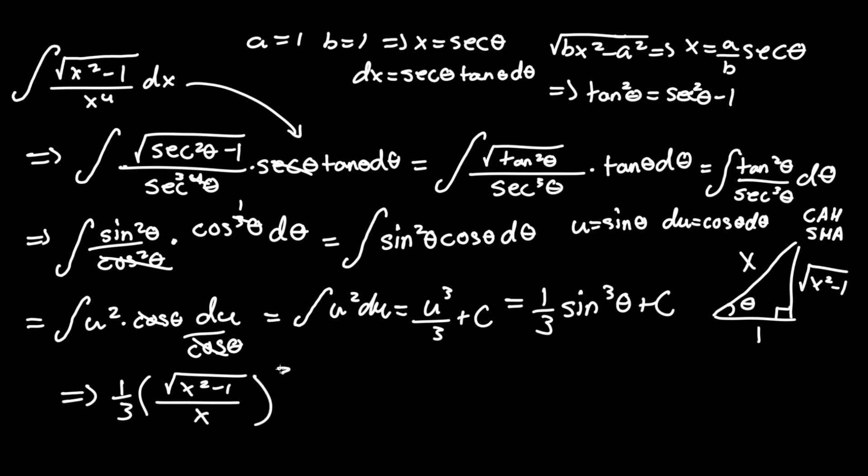Raise that to the third power, add a c there, and there is your answer. So that is the answer to the integral of square root of x squared minus 1 over x to the fourth dx. If you have any questions, please leave them in the comments below, and good luck.